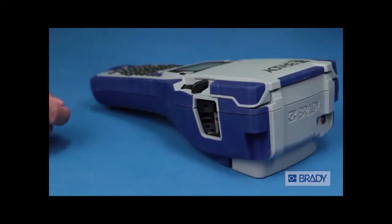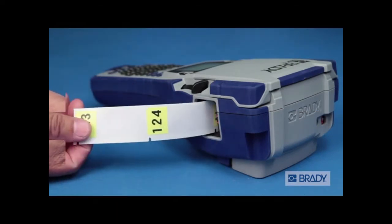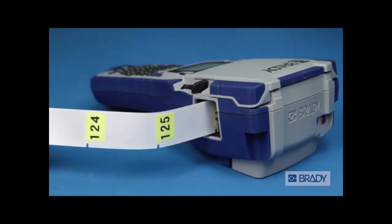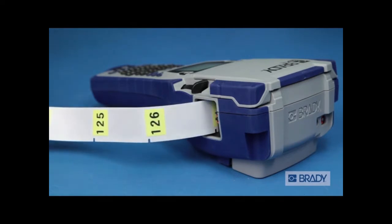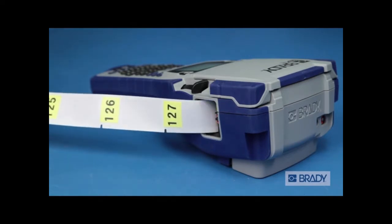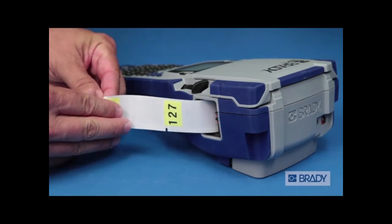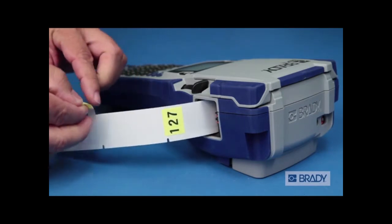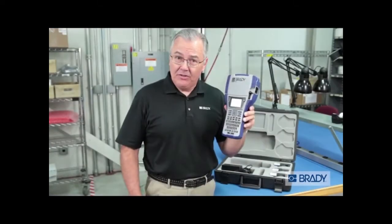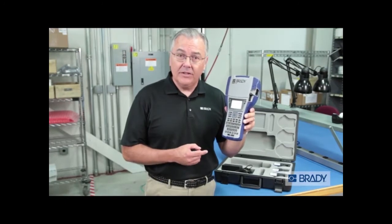The BMP41 printer uses both continuous and die cut labels to identify whatever you need. Die cut labels help you stay organized and efficient. With other printers, you can only use continuous tape. This printer does it all. You're one and done.